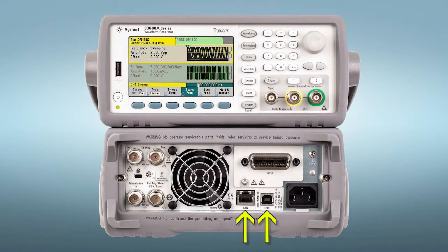Built-in LAN, USB, and optional GPIB make it easy to connect to the 33600 series. The USB port on the front can be used to upload or download instrument setups and arbitrary waveforms as CSV files.